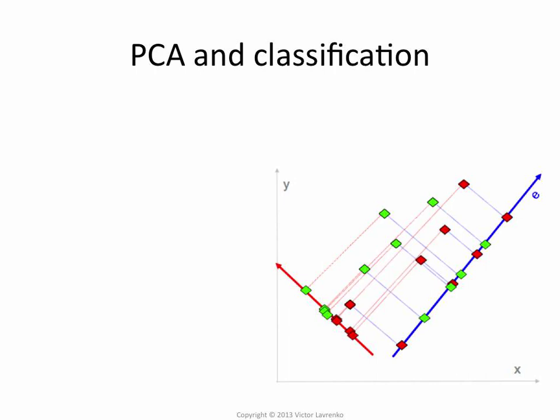The dimensions that PCA picks could be very unfortunate for a particular class distribution. Suppose I have these data points with two classes, the green class and the red class. PCA would pick the dimension of the greatest variance — it would project all the points to that dimension. And once you do that, the classes are pretty jumbled up. Every point is just represented by one number, and there is no way to separate the red and the green in this one dimension, no matter what you do.